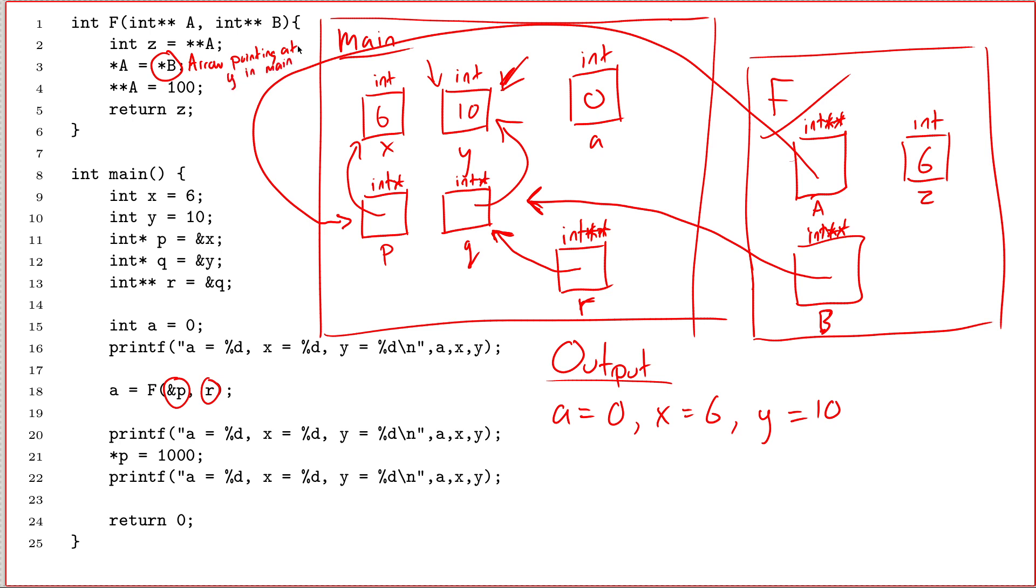So the right-hand side of this assignment is arrow pointing at y in main. Because there's no real term I can use in the context of f. I can't write ampersand y because f doesn't know about what y means. So the right-hand side of the assignment is an arrow pointing at the variable y in main. So what's the left-hand side of the assignment? Star a. So what I want to do is figure out what star a is. And then wherever I end up, assign an arrow pointing at y in main. So what is star a? Start at a, follow an arrow. And that takes me here. So into this box, I want to put an arrow pointing at y in main. So I erase the current contents of this variable. And I instead put an arrow pointing at y in main.